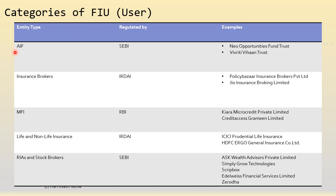There are a lot more users. Apart from the banks listed, there are other entities who are typically users and not providers by the very nature of their service. They could be AIFs — alternative investment funds — insurance brokers like PolicyBazaar, MFIs which are microfinance institutes, life or non-life insurance companies, and very importantly, RIAs and stockbrokers. RIAs are investment advisors, and stockbrokers include firms like Angel Broking and Zerodha.